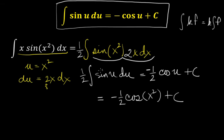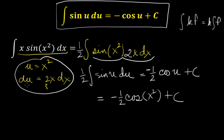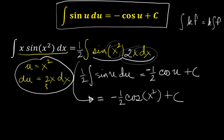When you really get good at this, you won't even need to write that intermediary step. You'll set u = x², see that du is 2x dx, note you have the factor of x and dx and only need a 2, make up for it to the left of the integral, and go immediately to: the integral of sin(u)du equals minus cosine(u) plus a constant.